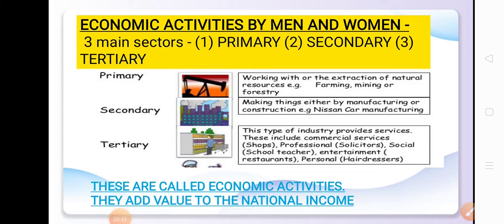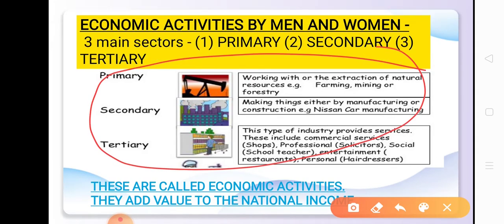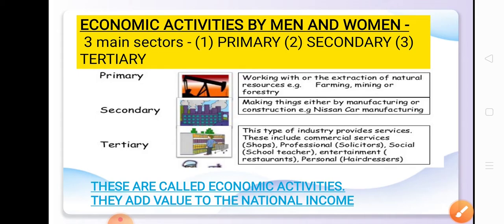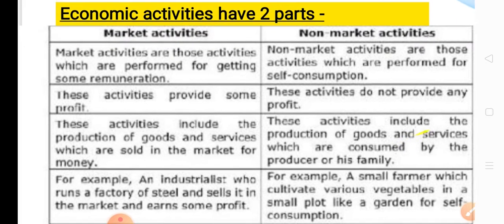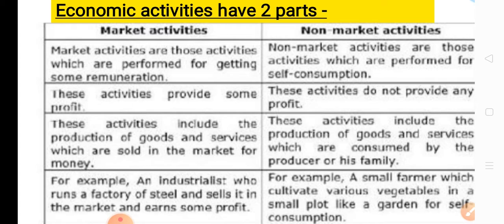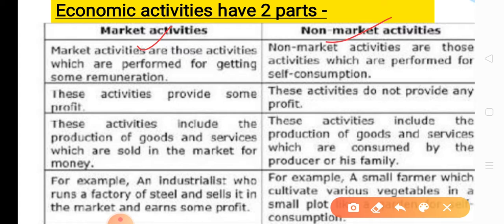These economic activities are further divided into two parts: market activities and non-market activities. The sectors we discussed — primary, secondary, tertiary — are different sectors of economic activities, not the two parts. Market activities are those where you are doing some work for getting some remuneration — you are being paid for it. All those activities where you earn money are known as market activities.